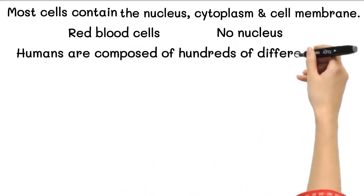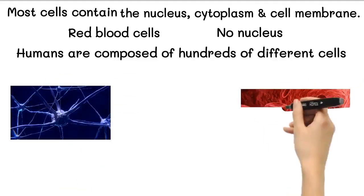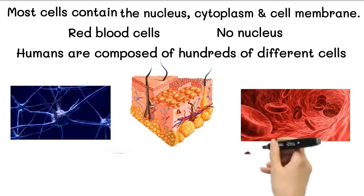Humans, for example, are composed of hundreds of different kinds of cells, from nerve cells to blood cells, skin cells to liver cells.